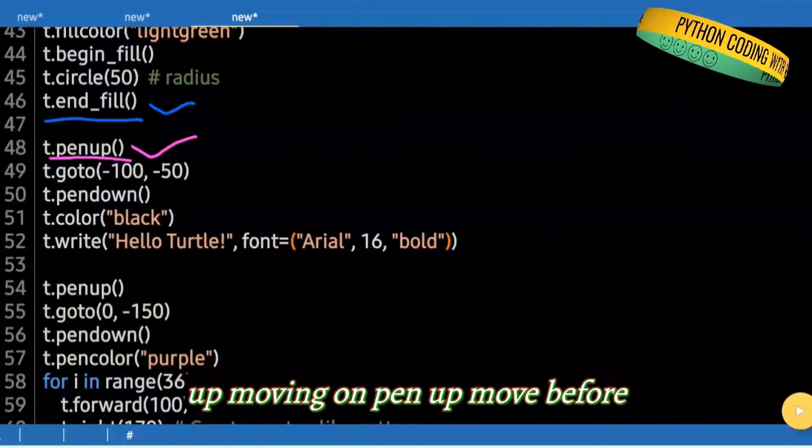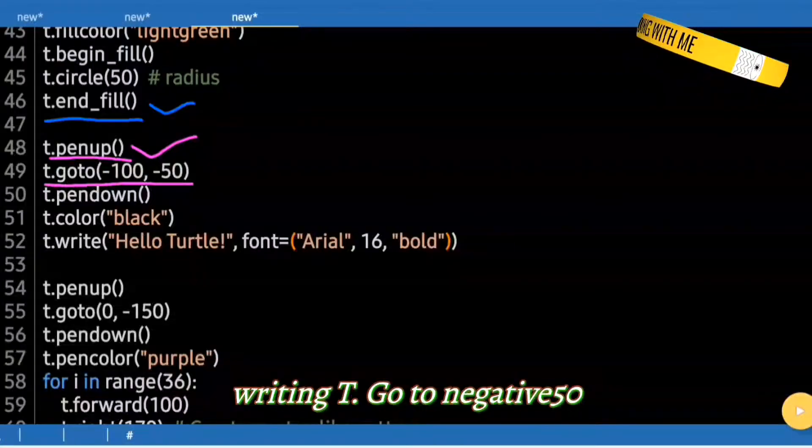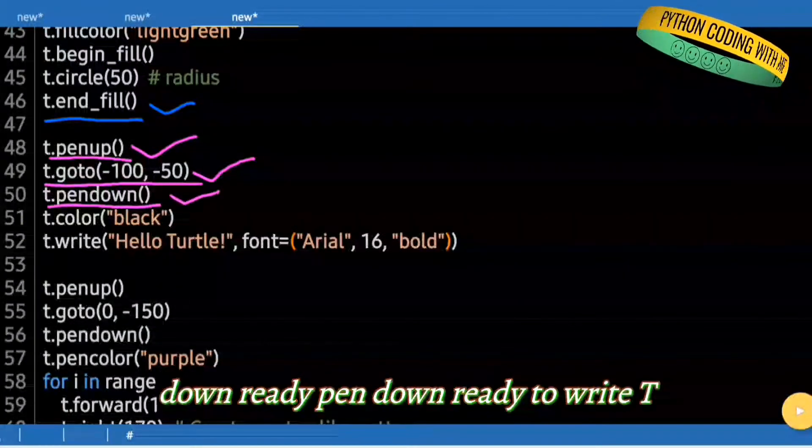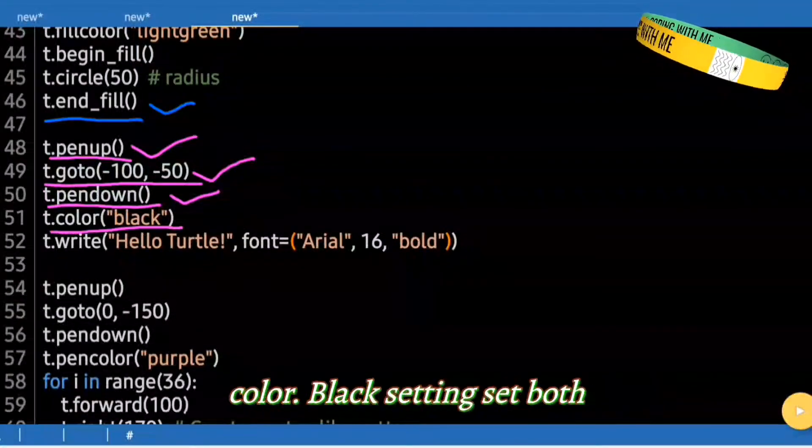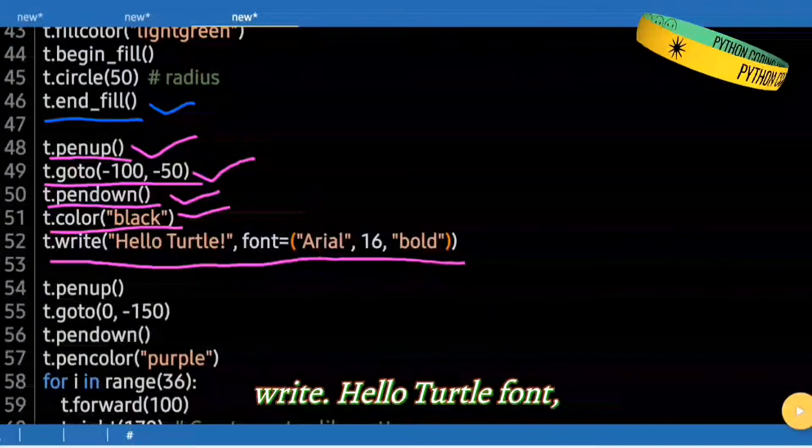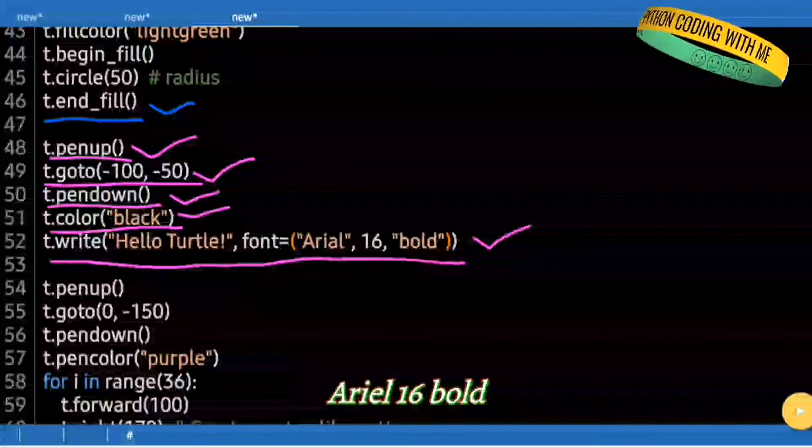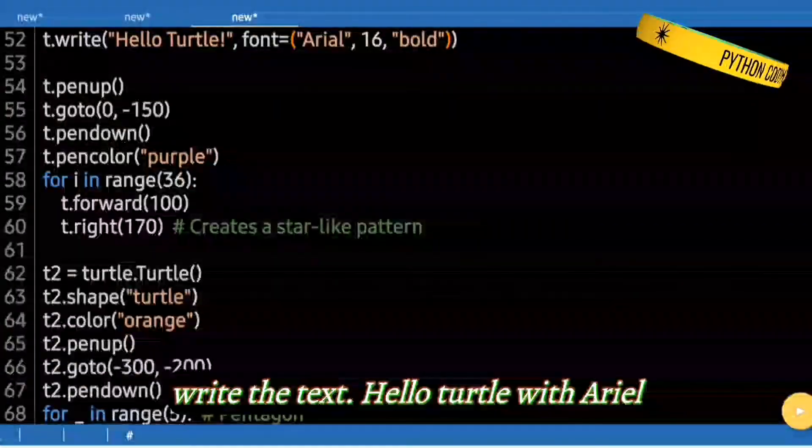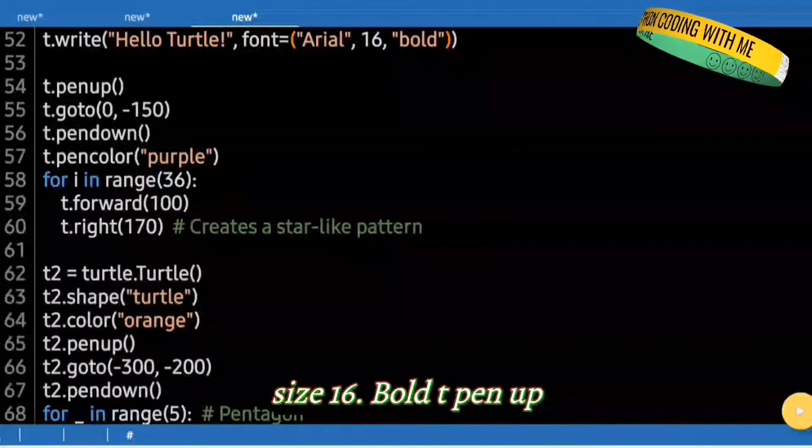t.penup(). Pen up, move before writing. t.goto(0, -150). Lower area. t.pendown(). Pen down ready to write. t.color("black"). Set both pen and fill color to black for the text. t.write("Hello Turtle", font=("Arial", 16, "bold")). Write the text Hello Turtle with Arial, size 16, bold.